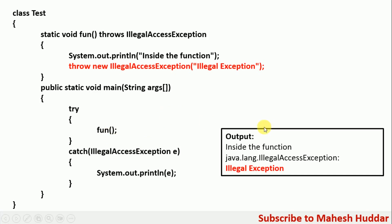This is how the output will look like. First it will display the message inside the function, and then because we are throwing this particular exception, it will go to the catch block and print the system-defined message, which is java.lang.IllegalAccessException.